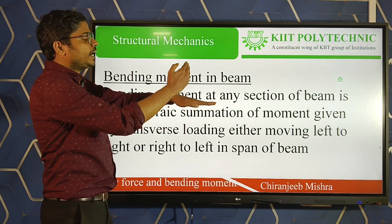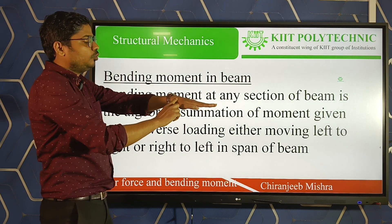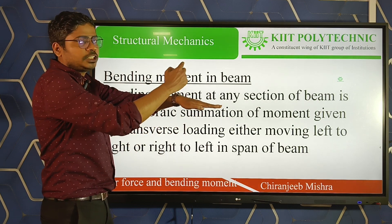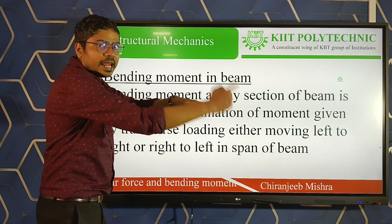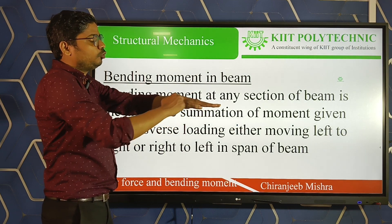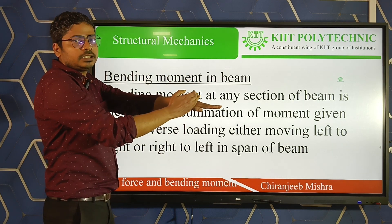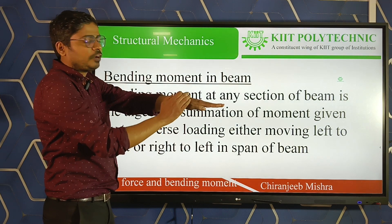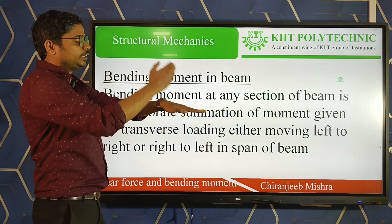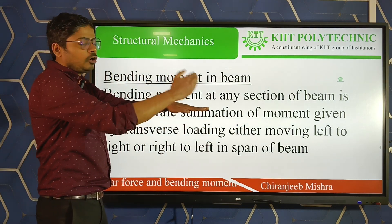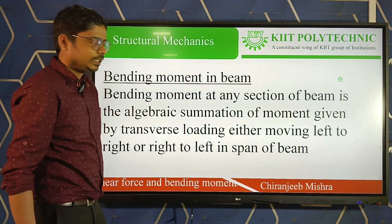For example, if you are calculating the bending moment at a section of a 5-meter beam at 1 meter from the left: if a force of 5 kN is acting at that point, the bending moment at that section is 5 × 1 = 5 kN·m. All force moments considered at a section, moving left to right or right to left, give the bending moment at that section.